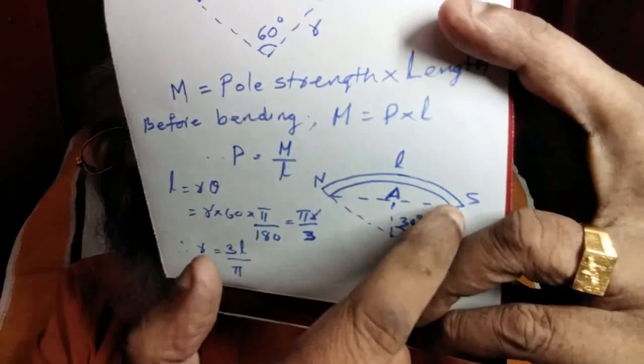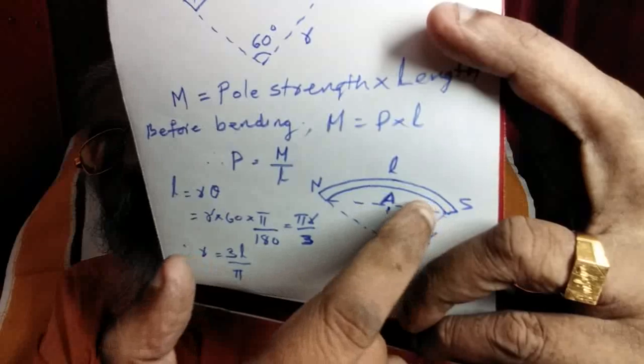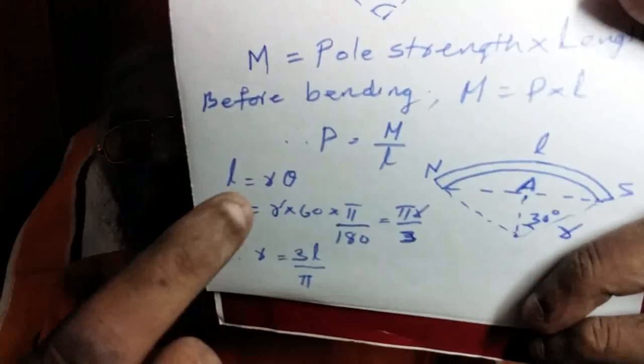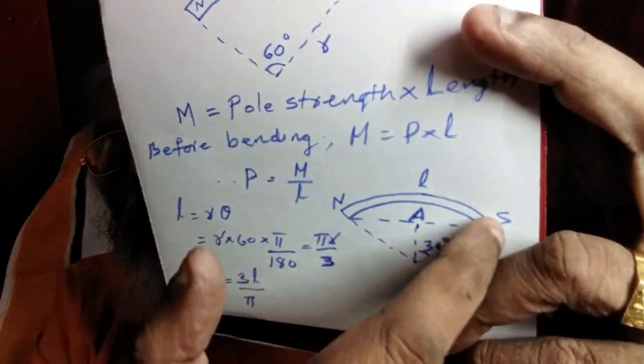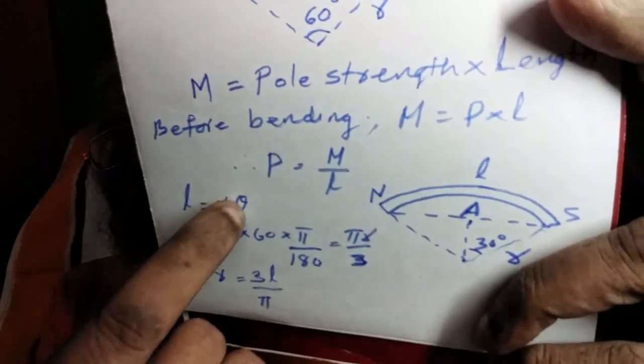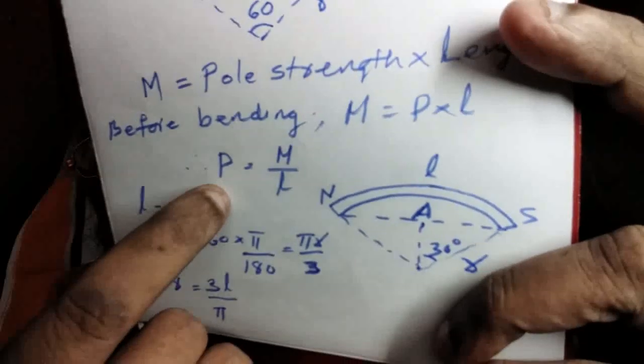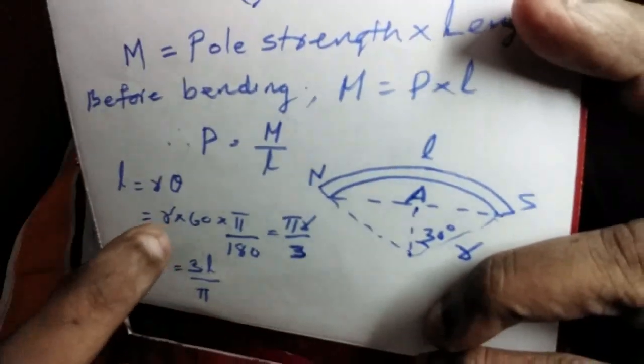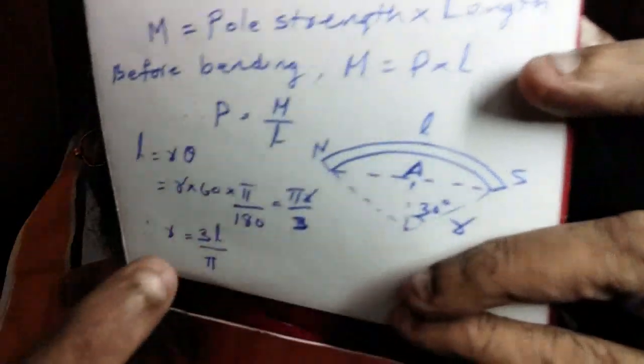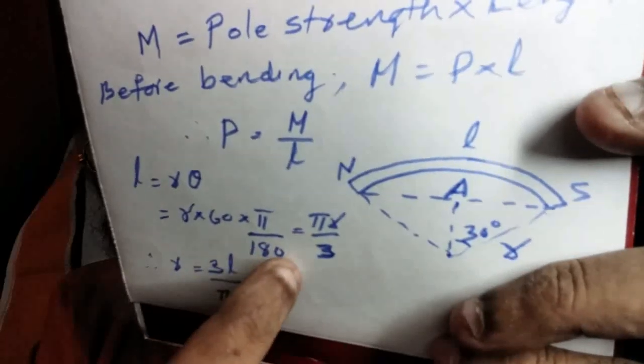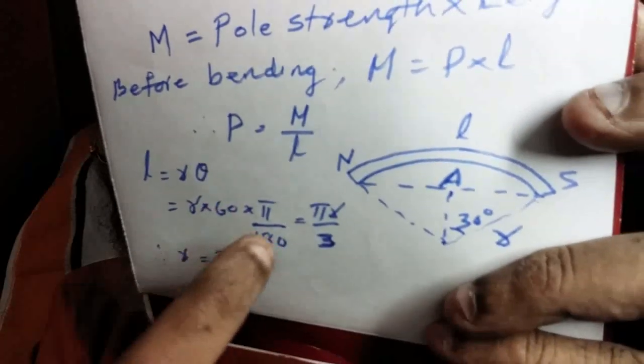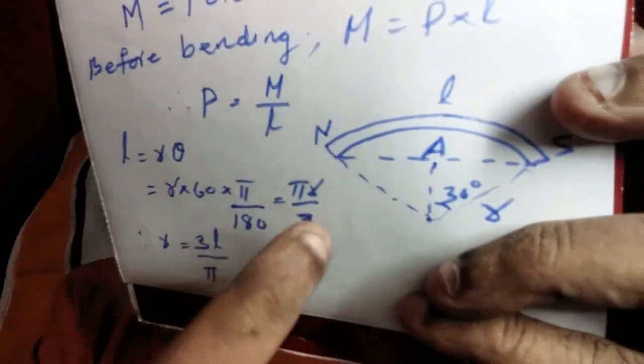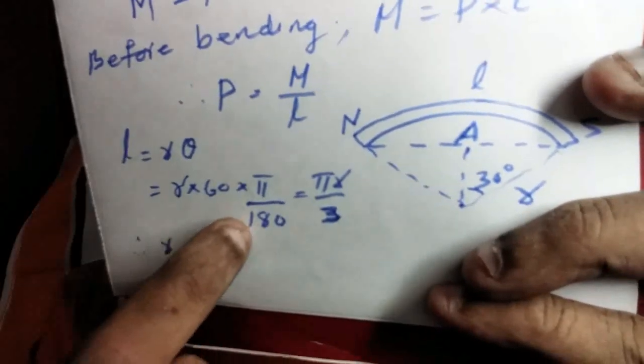The magnet length is the arc length N to A to S. This is a straight line. The angle is 60 degrees. 60 into π by 180. π by 180 will multiply by degrees to get radians. That is πR by 3. From which L equals πR by 3. So, R equals 3L by π.